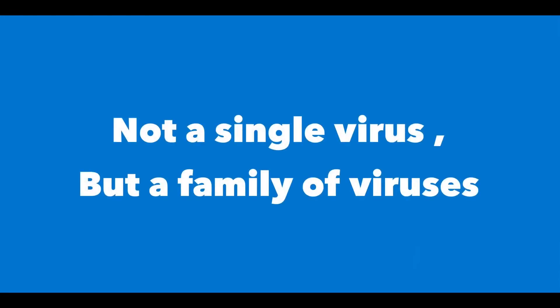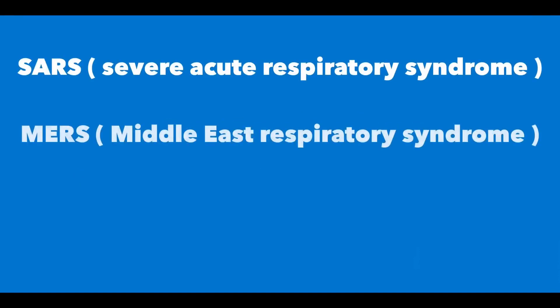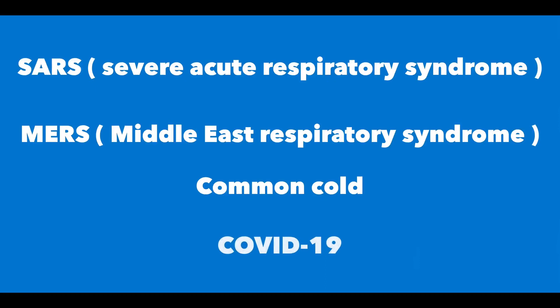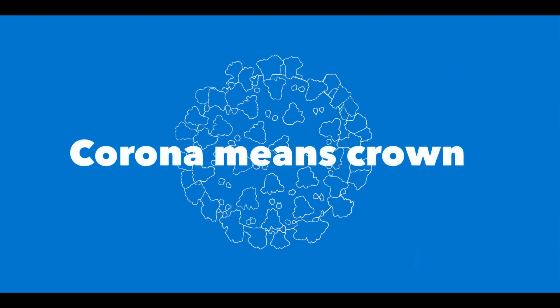The coronavirus is not a single virus but actually a family of viruses. This family includes SARS (Severe Acute Respiratory Syndrome), MERS (Middle East Respiratory Syndrome), the common cold, and the 2020 pandemic virus COVID-19. These viruses are called coronaviruses because of their protein spikes that stick out and give the virus a crown-like appearance. The word 'corona' is a Latin word meaning 'crown.'